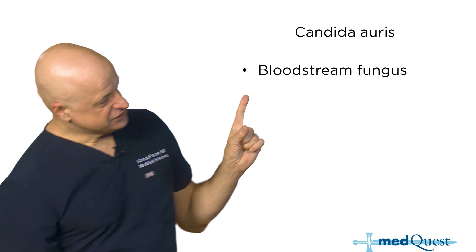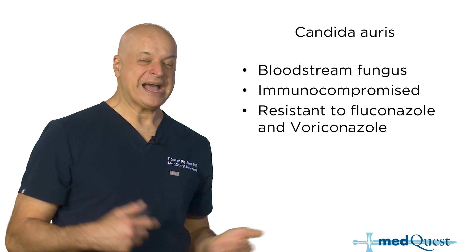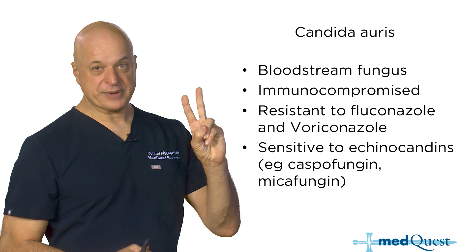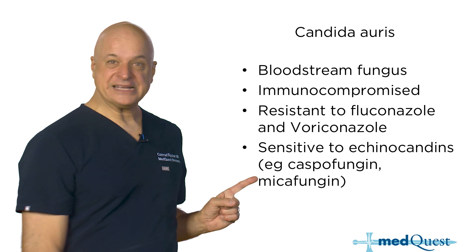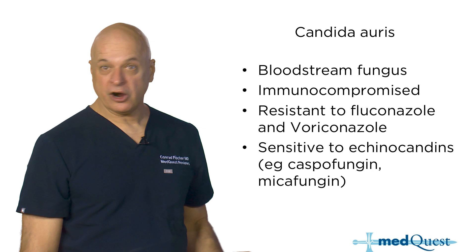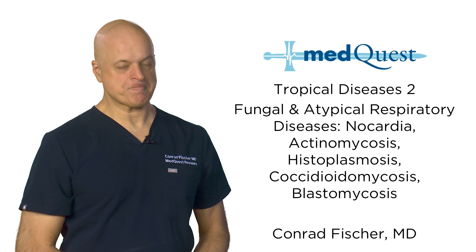We're afraid of candida auris spreading and causing disseminated disease in the vulnerable. The echinocandins — caspofungin, micafungin, anidulafungin — are really great for all the candidas, and there's no reason to use amphotericin for them. Without Step 3, you'd never study this — but now you've got it covered.